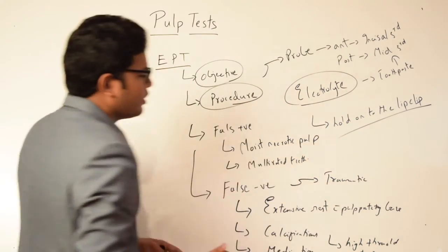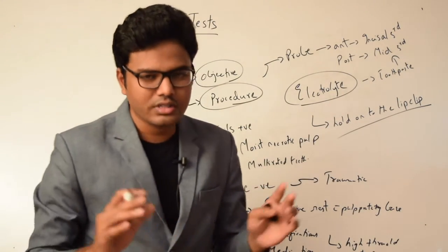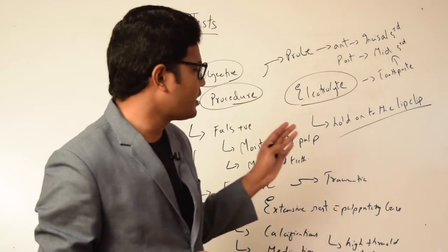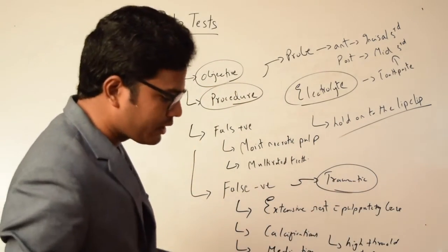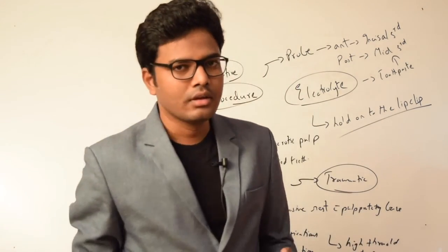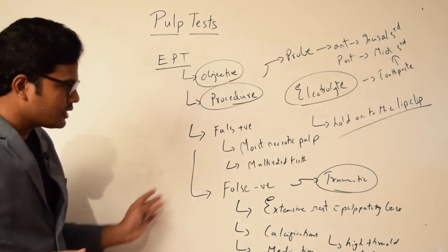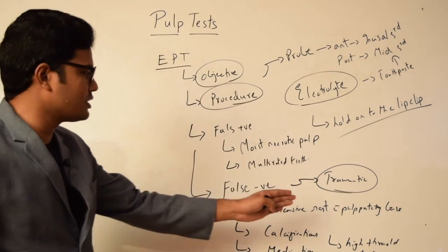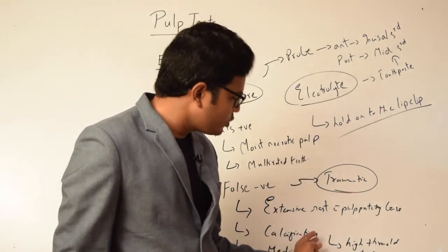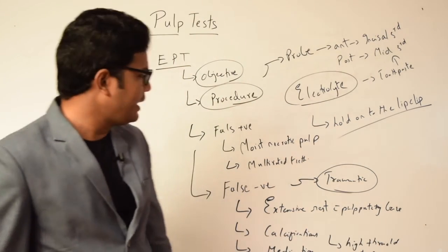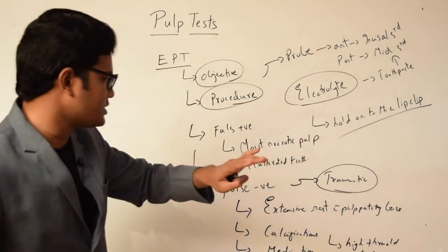Most importantly, false negative results are seen in traumatic cases, in luxation cases with a recent history of trauma less than two weeks or one week. What happens is the pulp will be in a physiological state of shock that we term as stunned pulp. Even in traumatic cases, that's the reason why when there is trauma to a particular tooth, pulp testing is contraindicated for the first two weeks because the pulp is in a physiologic state of shock.